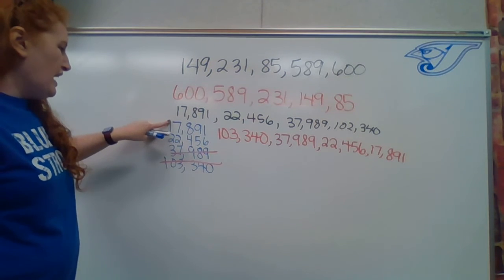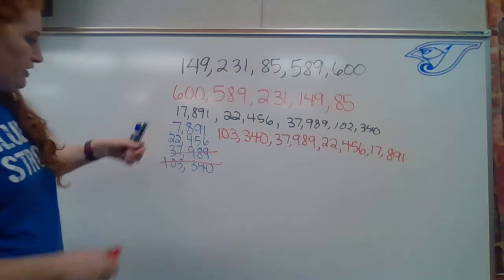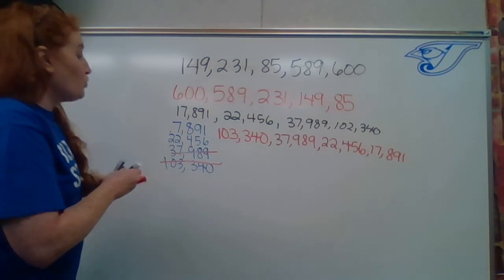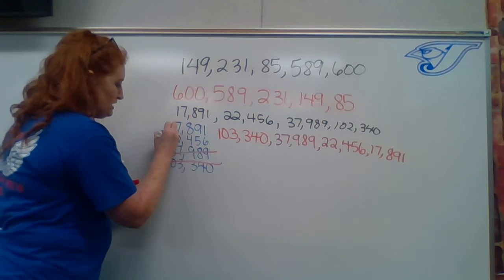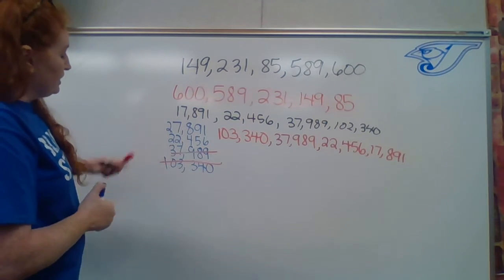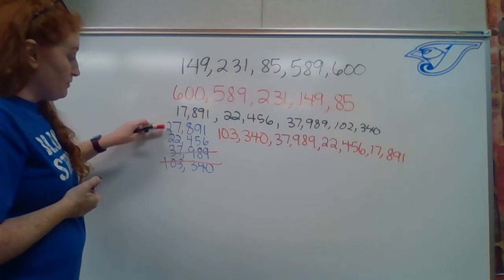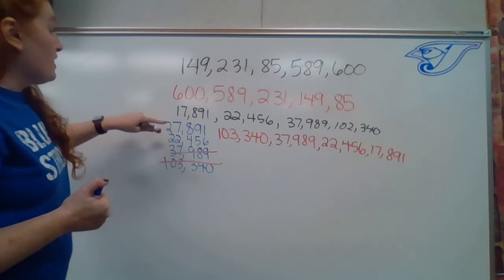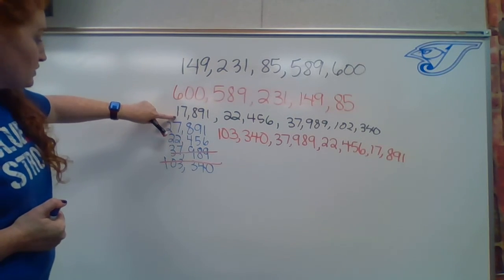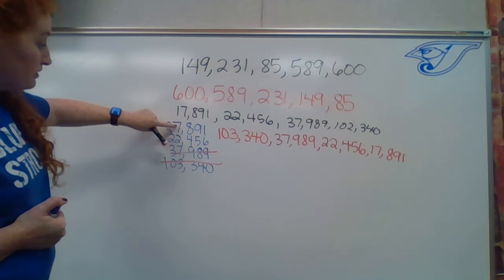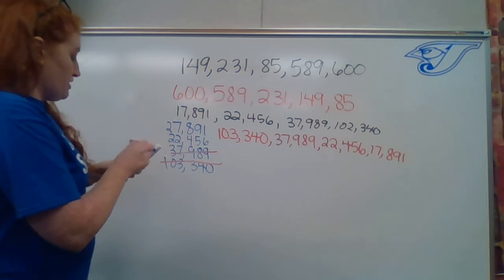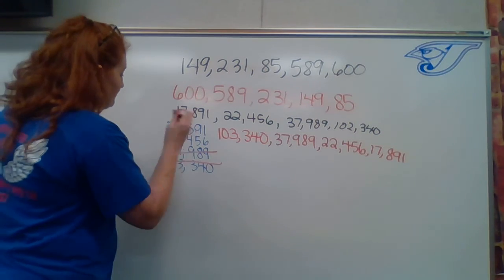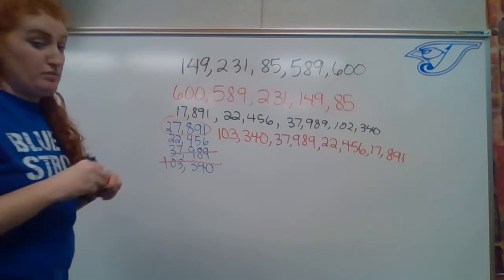Now what if, though, it was 27,891? Do you remember what we did? What we did is we looked and we're like, oh, the two digits are the same value in the 10,000th place. Then we have to move over to the 1,000th place and we can see, oh, seven is a larger digit than two. Its value is bigger. So in that case, 27,891 would be bigger.